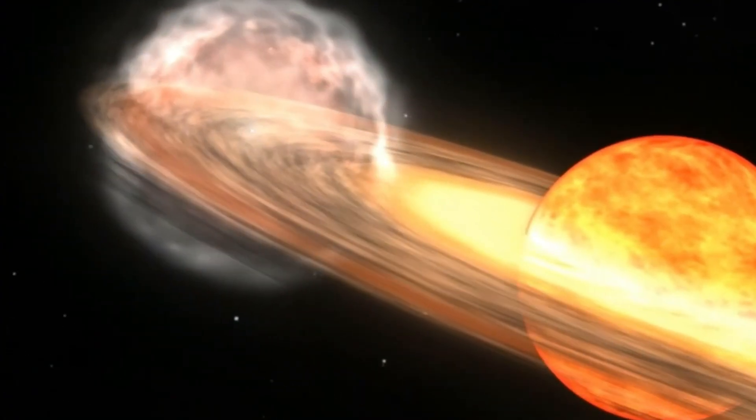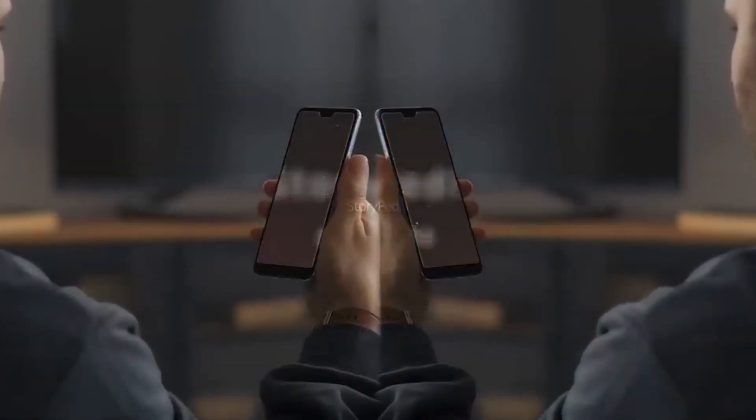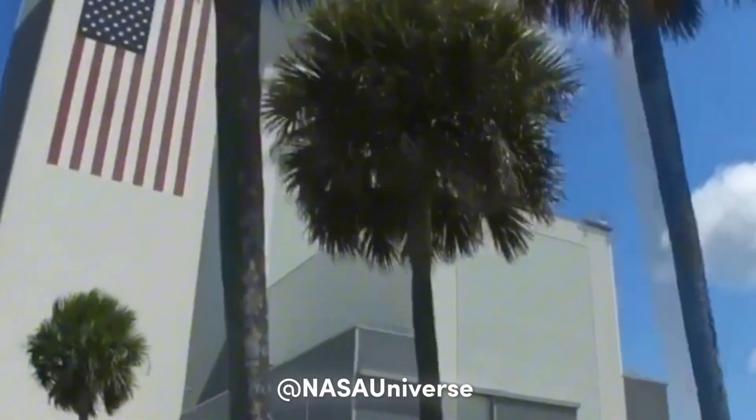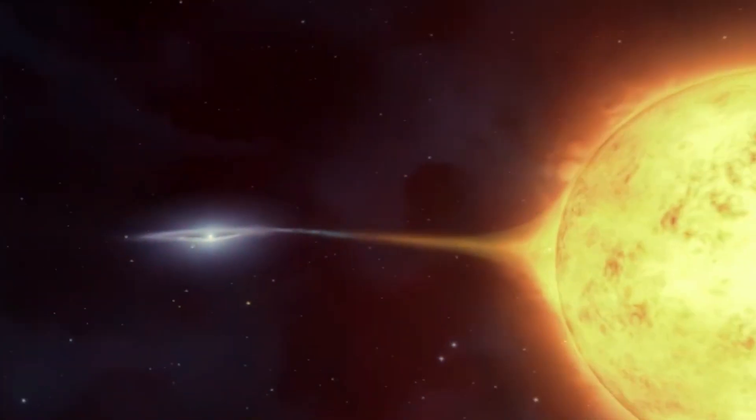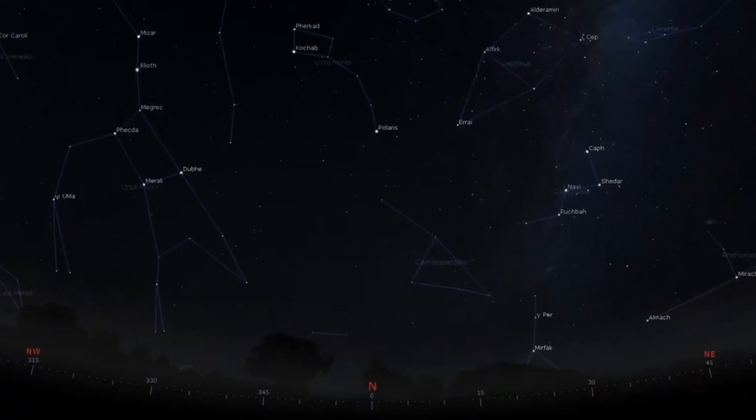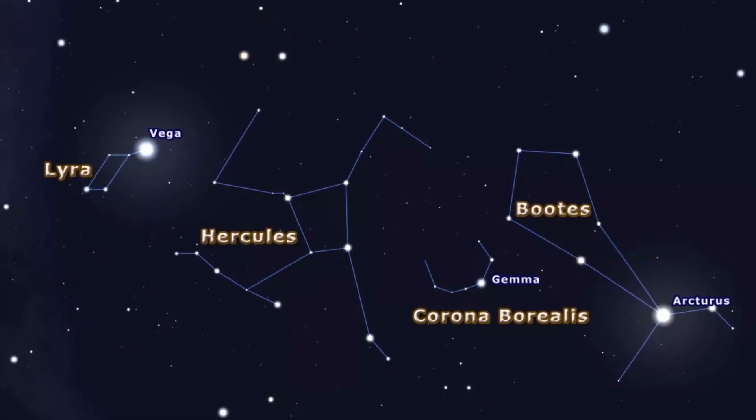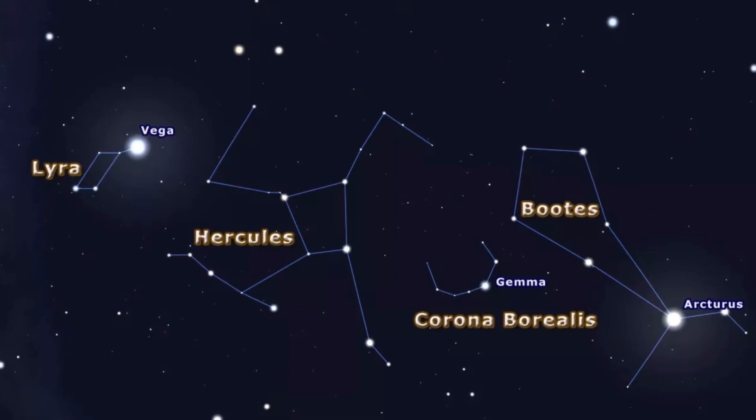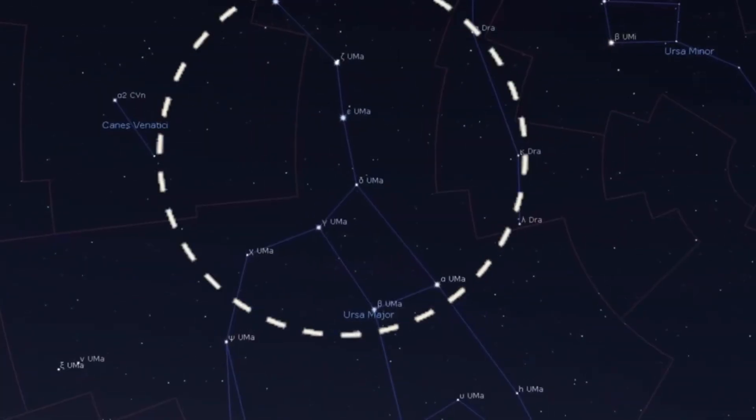Stay updated on the brightening T Corona Borealis Nova event by checking astronomy sources and following NASA Universe on Twitter in the upcoming weeks and months. The nova will appear in the Corona Borealis constellation, which can be a bit challenging to find. It forms a small semicircle near the Bootes and Hercules constellations. Bootes can be identified by locating the plow star pattern in the sky and following its handle away from the asterism. Corona Borealis can then be found to the left of Bootes.